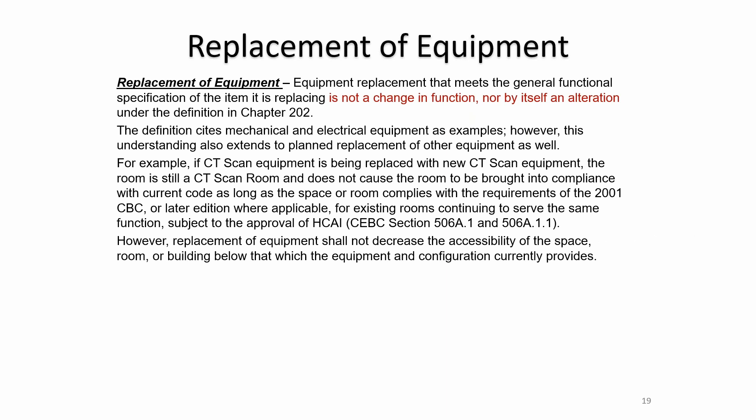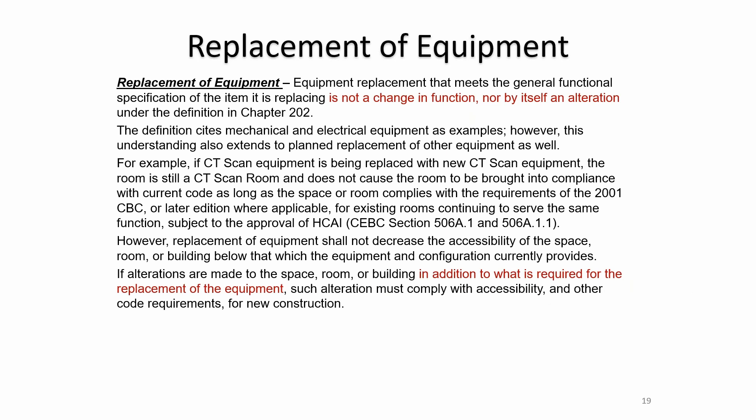However, replacement of equipment shall not decrease the accessibility of the space, room, or building below what the current equipment configuration provides. If a new CT scanner is larger in footprint than the one it's replacing and no longer meets the clearance requirements in the room, the room would be forced to be larger — which would trigger accessibility because you're now being forced to move walls. Any alterations made in addition to what is required for equipment replacement must comply with accessibility requirements for new construction.